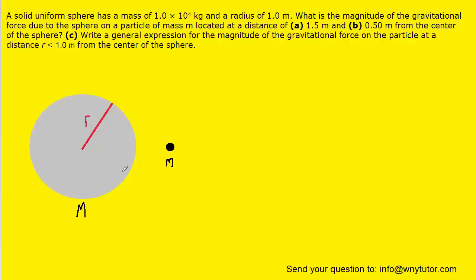The large circle in gray represents the solid uniform sphere whose radius is 1 meter. For part A of the question, we have a particle whose mass is m located 1.5 meters from the center of that large gray sphere. What we want to notice about part A is that this mass, lowercase m, is located completely on the outside of the sphere marked as capital M.